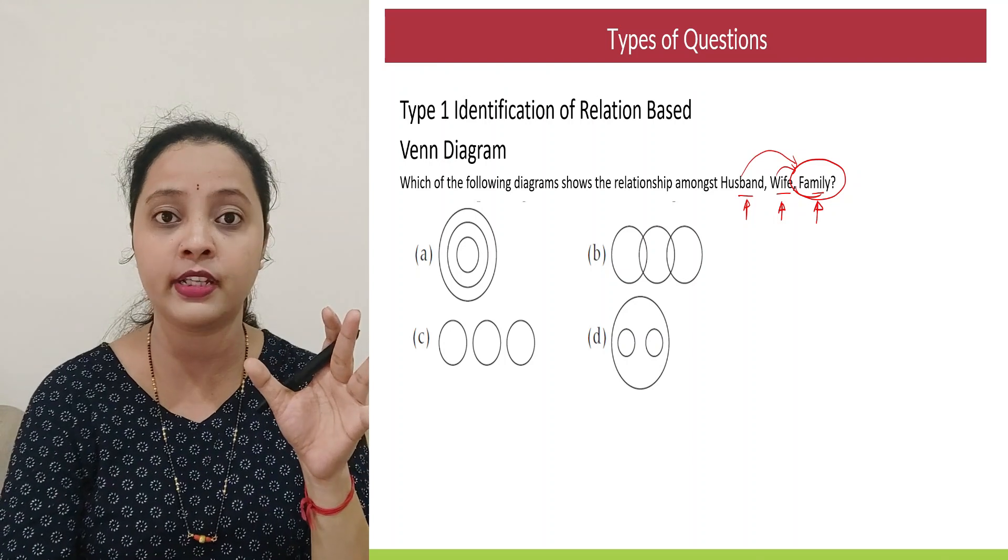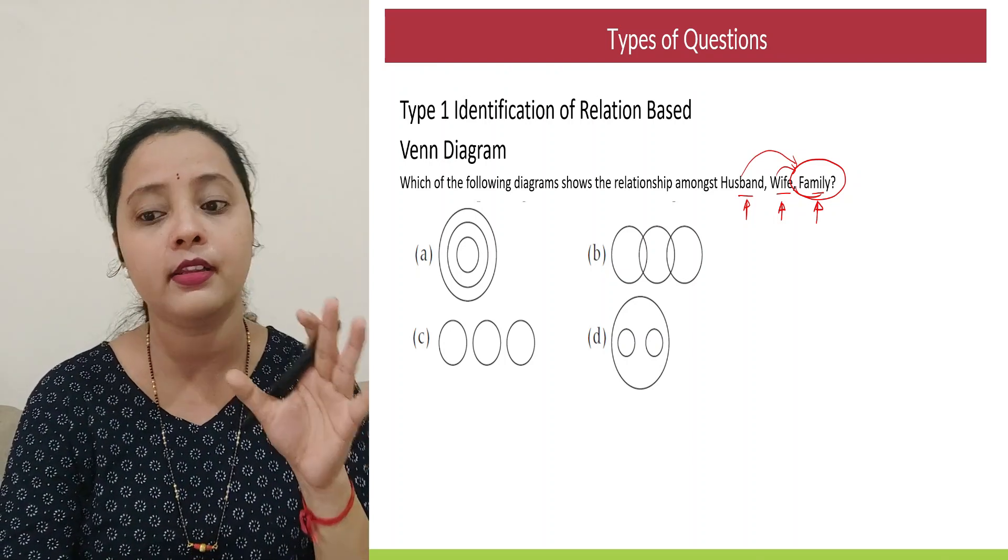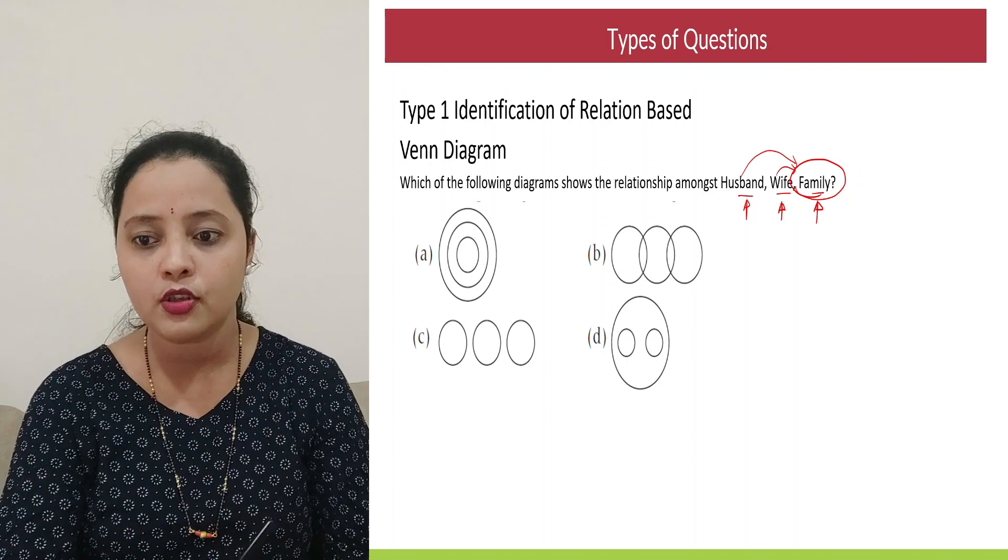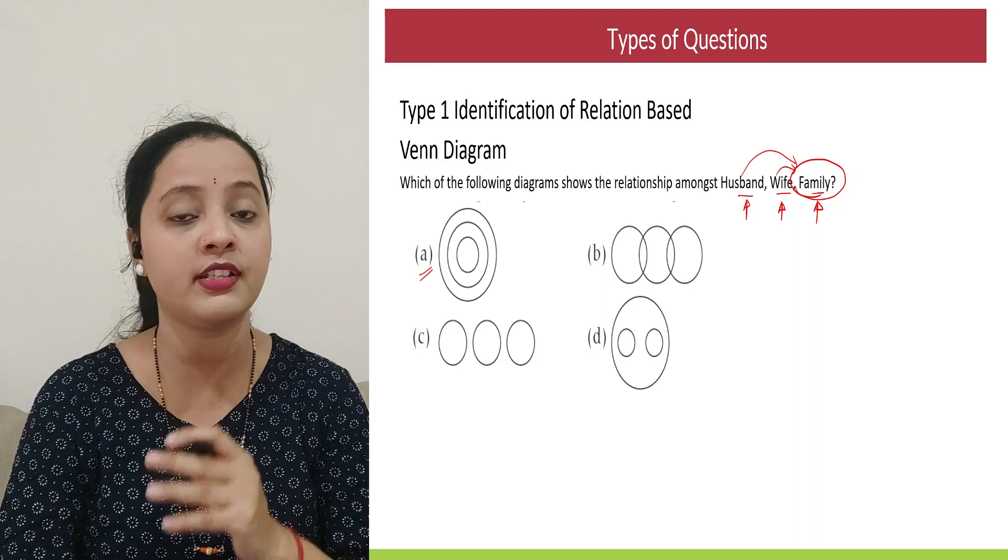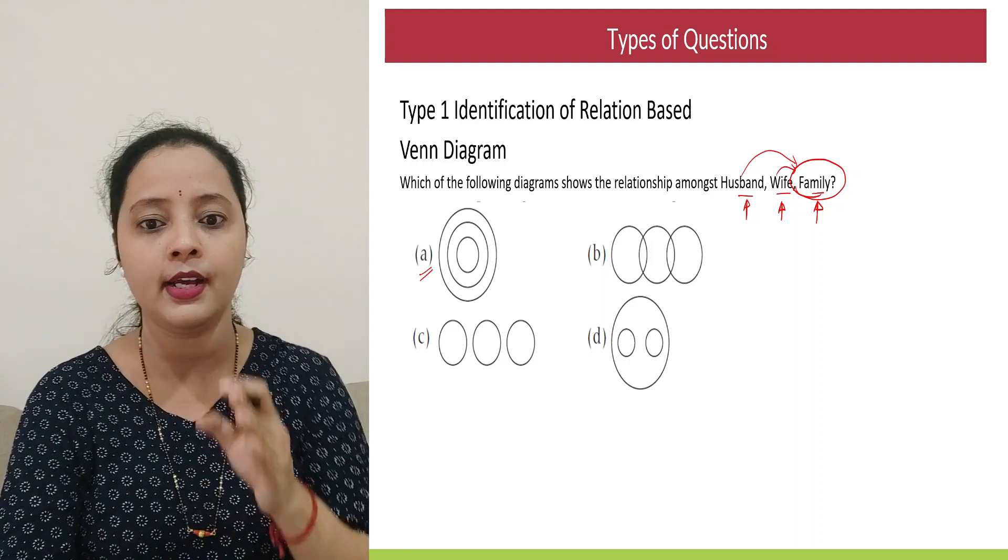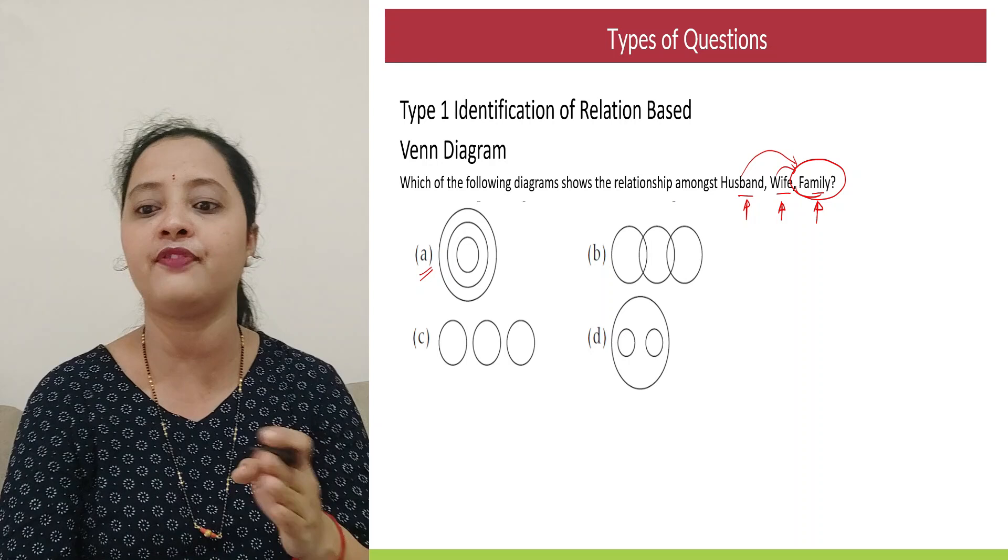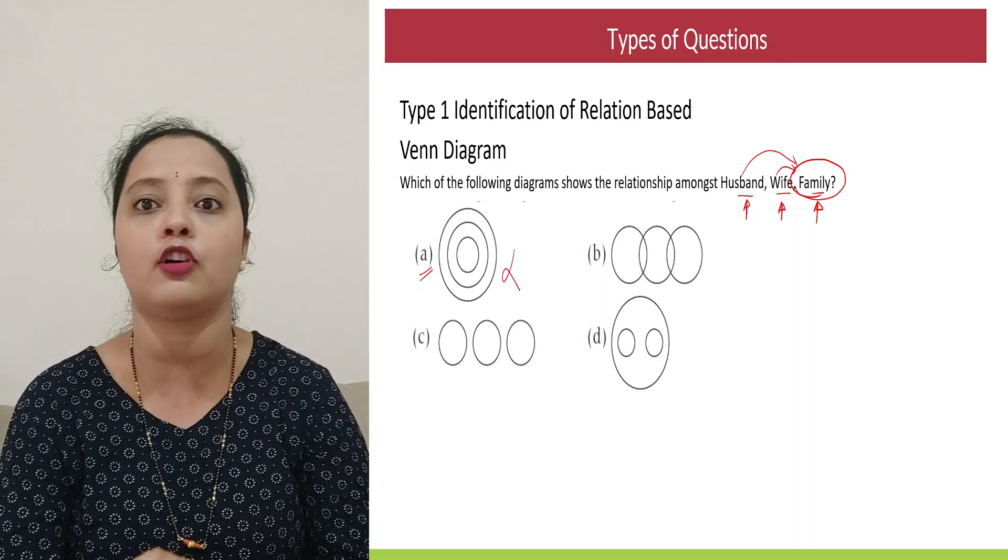So all these explanations or all these points, are they clear? Based on that, let's look at the question. So first option A. Is this possible? No. This is defined with the first point that I made. That husband cannot be wife and wife cannot be husband. So option A, not possible.